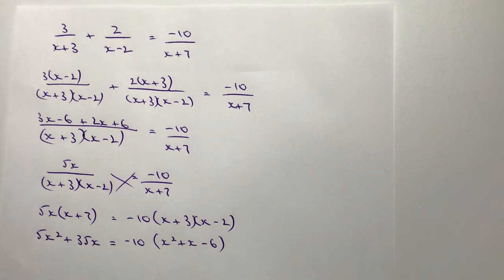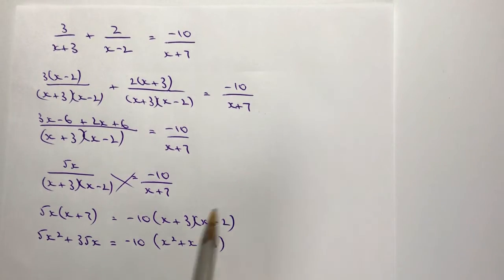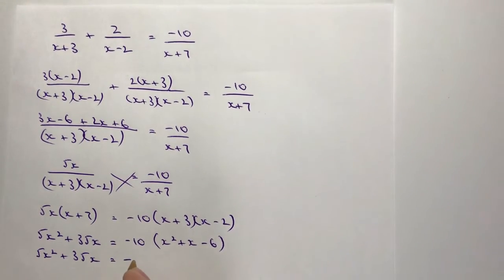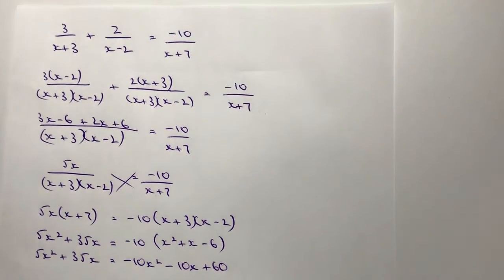So we're kind of getting there and it's looking a little bit more comfortable. I'm going to multiply this out and then move the working up to this side of the paper. So this I'm going to get 5x squared plus 35x, and this I'm going to get minus 10x squared minus 10x. And remember now, minus 10 times minus 6 is going to be giving me plus 60.